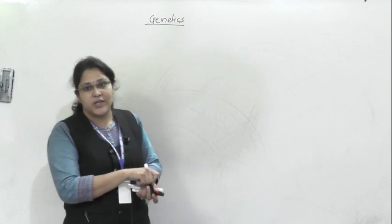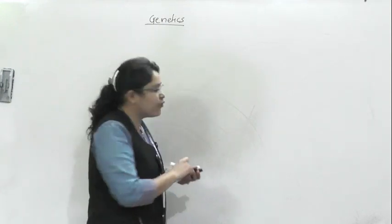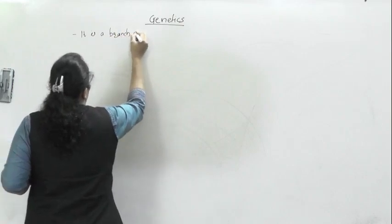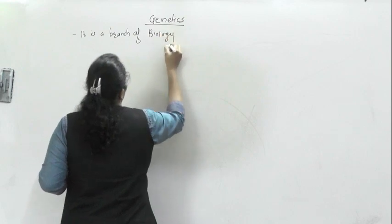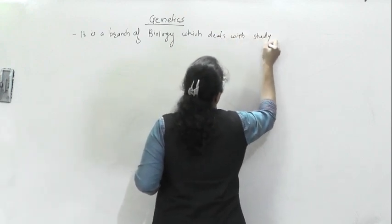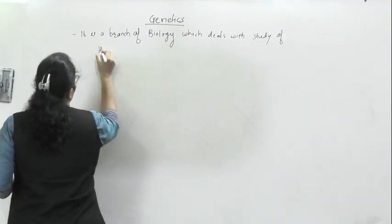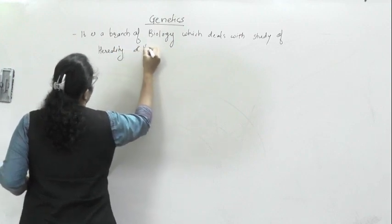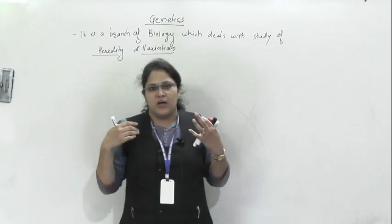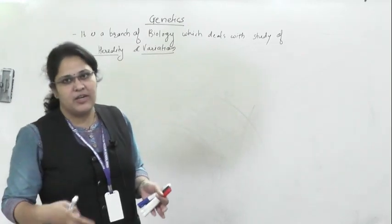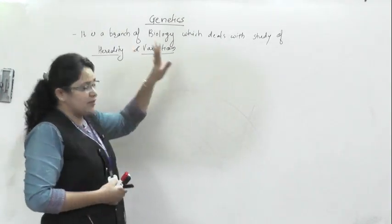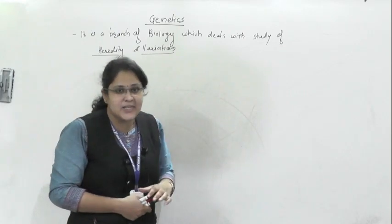Genetics is a branch of biology which deals with the study of heredity and variation. It is a common branch for both botany and zoology because the principles of inheritance are applicable to each and every living organism, although there are some exceptions which we will discuss when we reach those points.